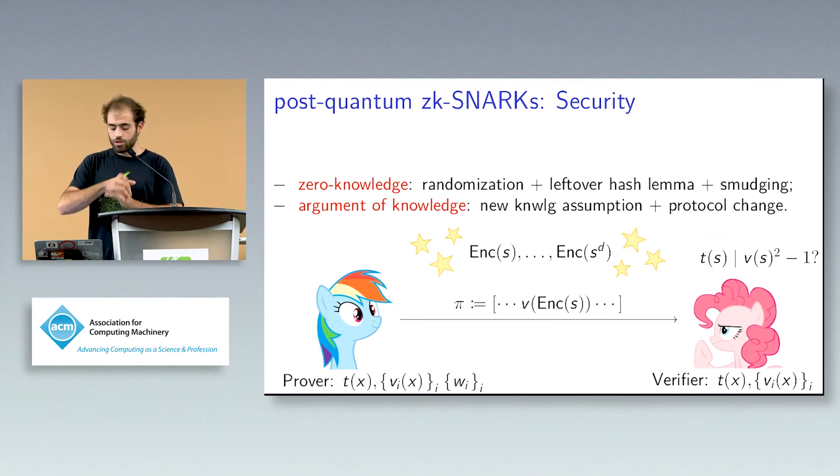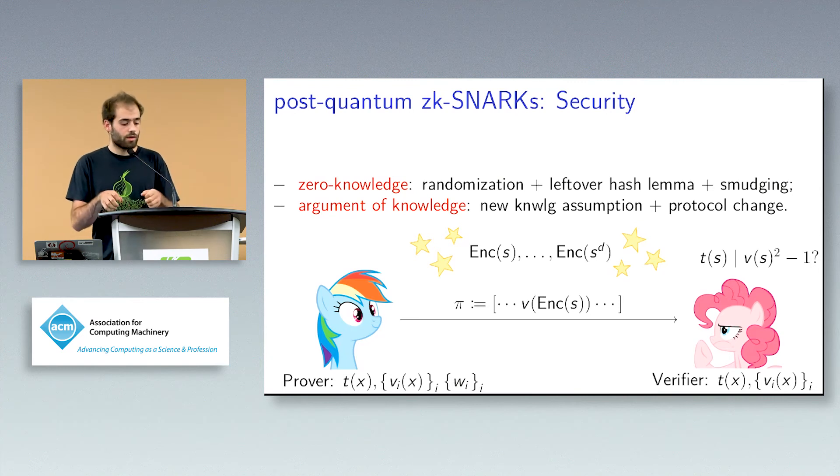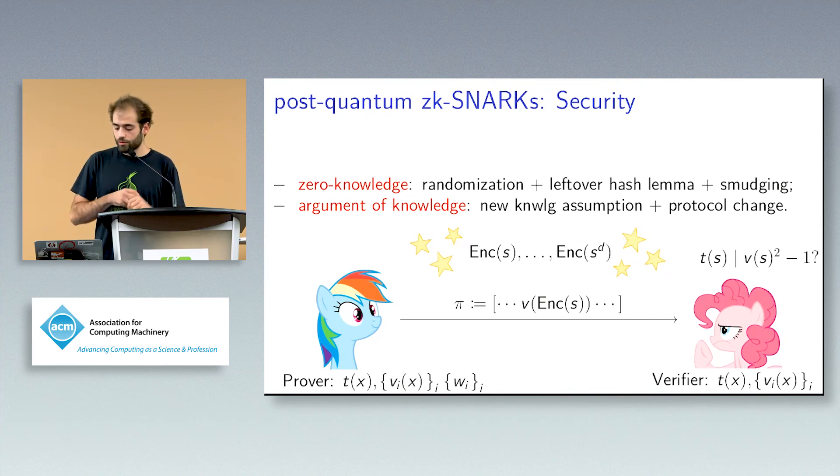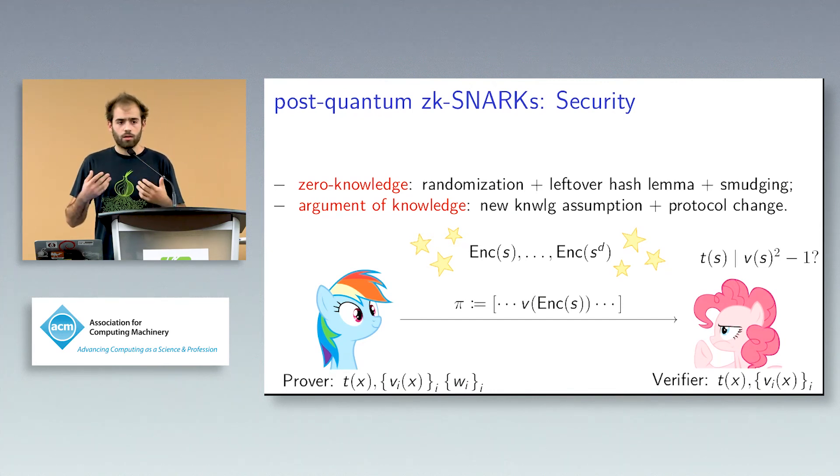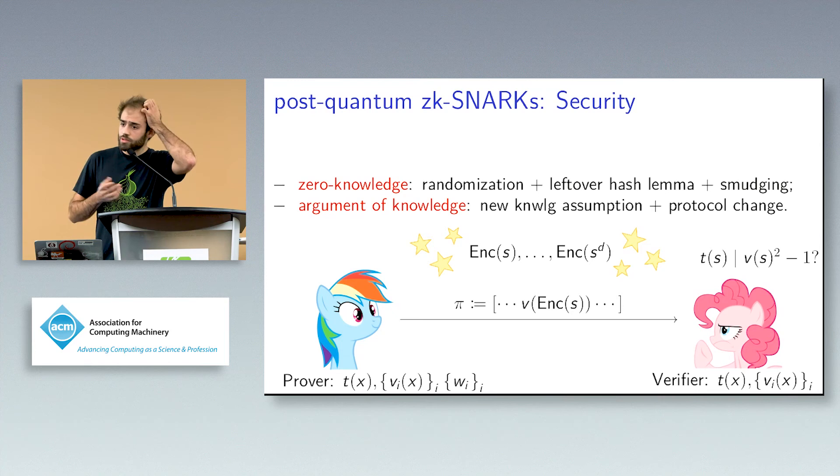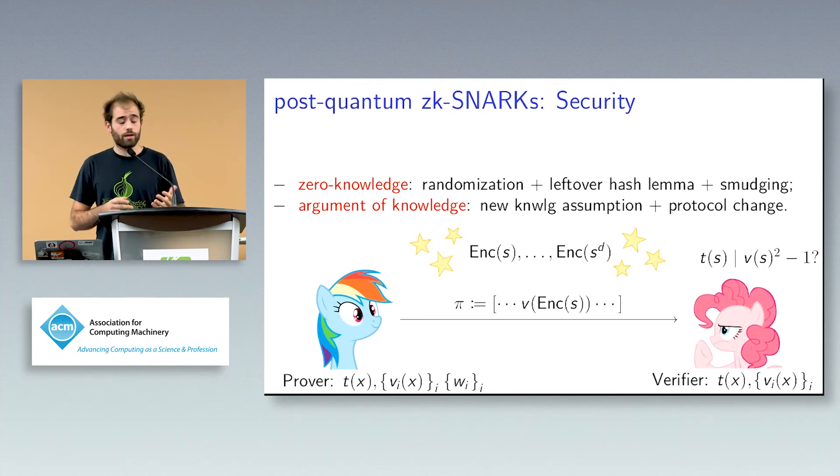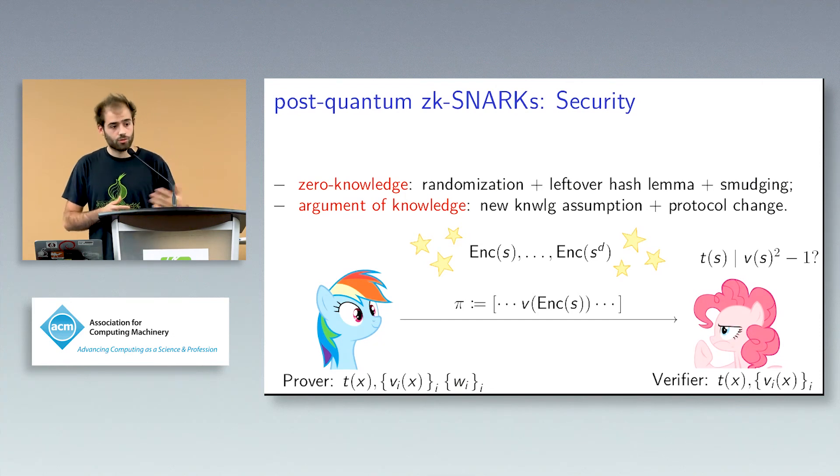Why is it an argument of knowledge? Because we brought those knowledge assumption that were, we sort of introduced those knowledge assumption by some knowledge assumption that were before used in the case of groups and we migrated them to the case of lattice encodings and specifically to symmetric Regev. And actually we proved them to be weaker than assumption using in some concurrent work by Yuval and others, which is by the way, much better than ours in some for some other reasons. And we also had to slightly change the protocols in order to allow a reduction to these knowledge assumptions.